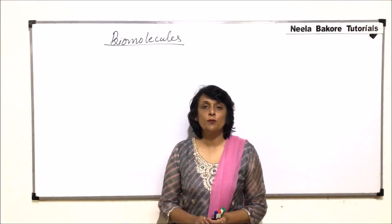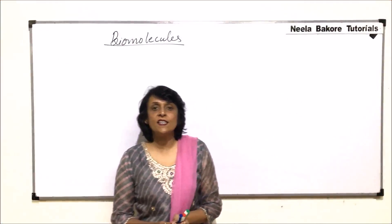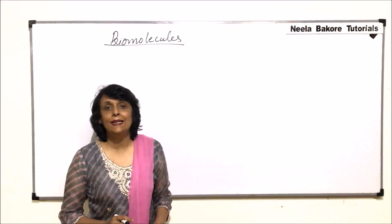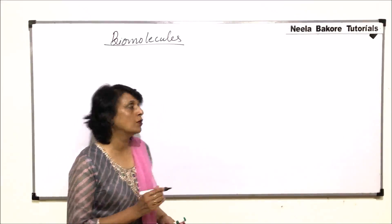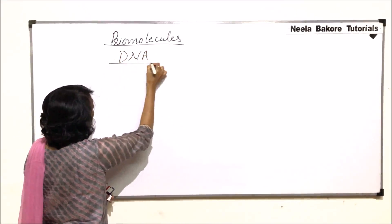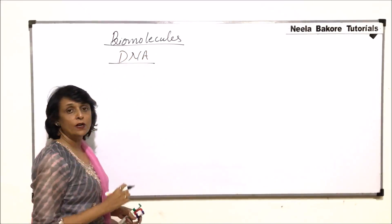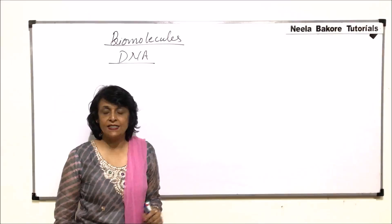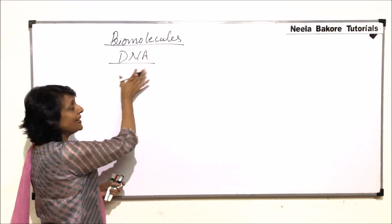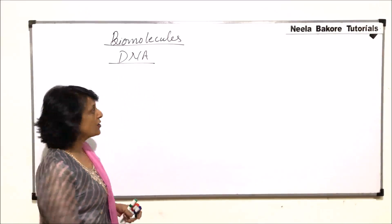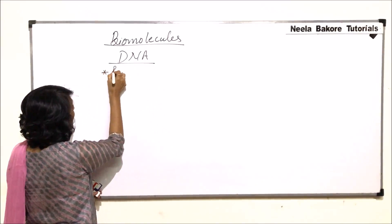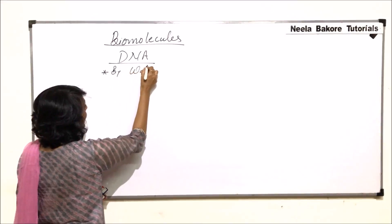The next biomolecule we are discussing is a macro biomolecule and it is a polymer of nucleotide. We are talking of DNA or one of the nucleic acids. There are two nucleic acids: DNA and RNA. DNA is a double helical structure and the structure we are discussing was given by Watson and Crick.